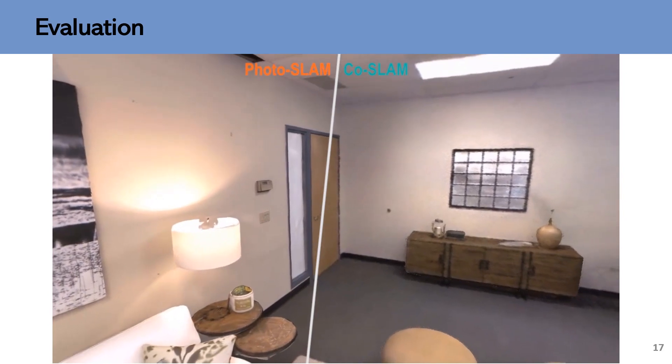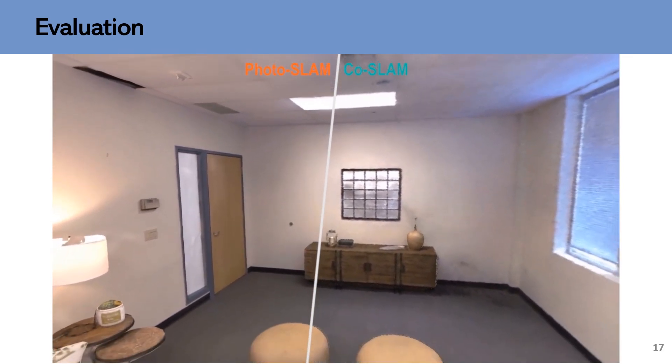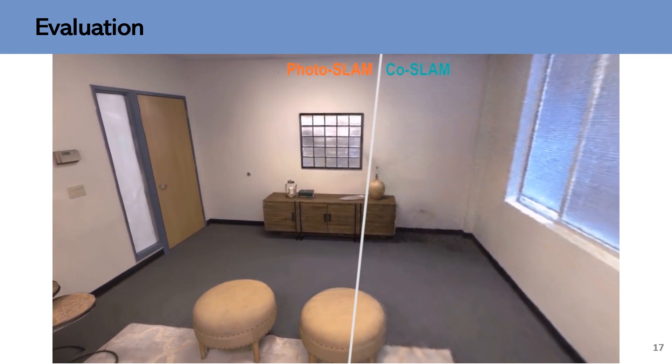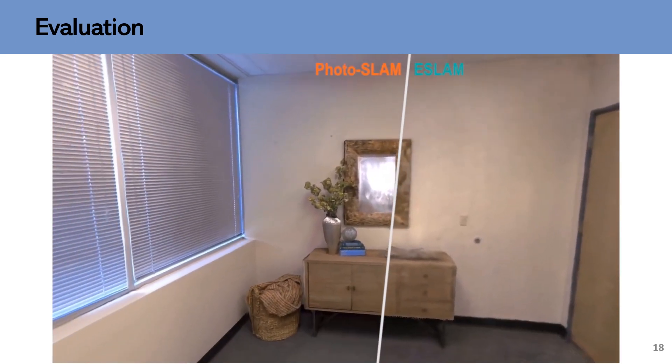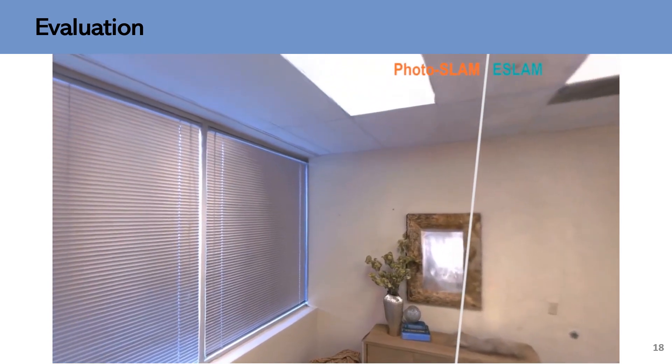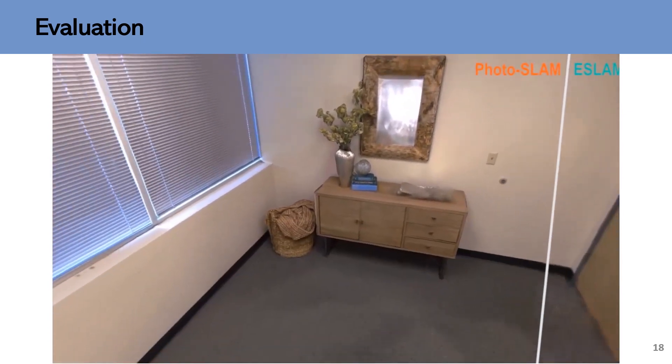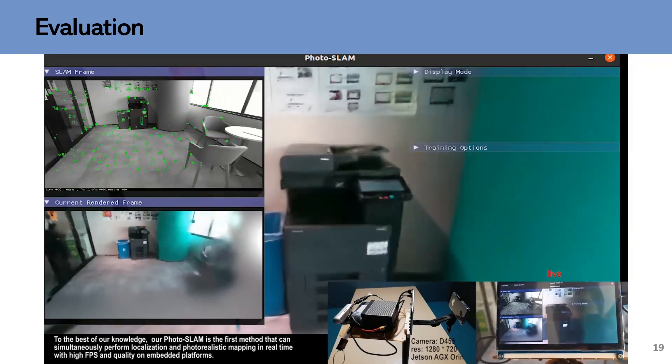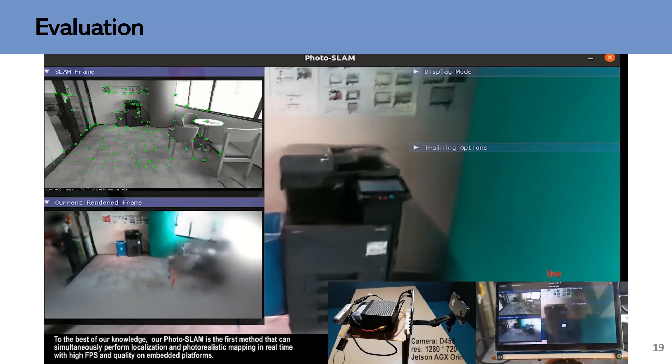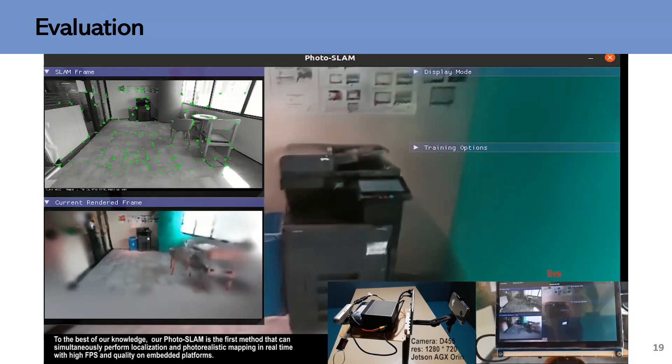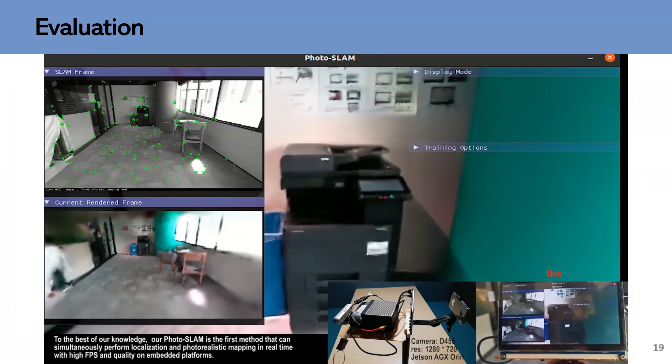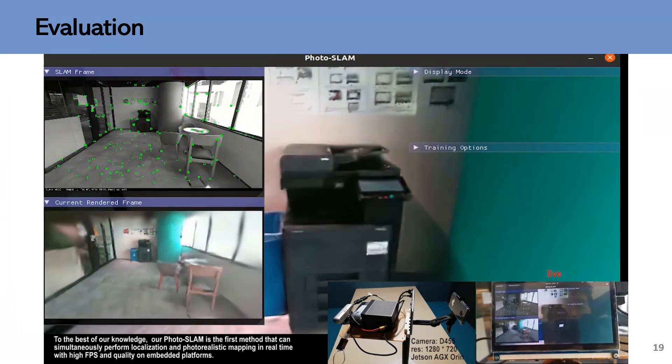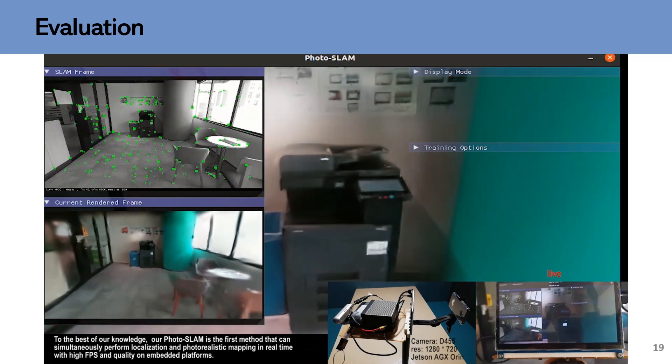These are demo videos showing qualitative comparison with other methods. Our system not only runs faster but also achieves better reconstruction. This is a demo using a Jetson development toolkit. Our system can perform online mapping seamlessly on an embedded device. We verify its potential for advanced robotics and computer vision applications in real-world scenarios.